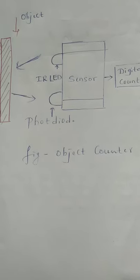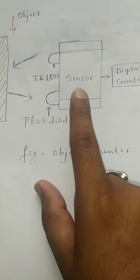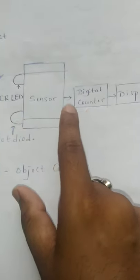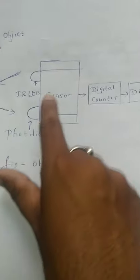So next we will move on to the construction of object counter. First of all, it consists of a sensor, digital counter, and display devices as shown in the figure.